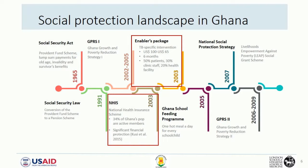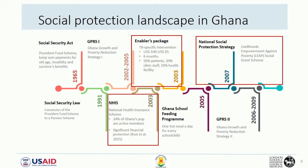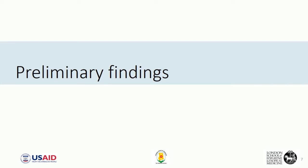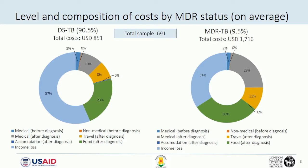The Enabless Package, launched in 2003, is specific for TB patients but is currently being phased out. The Livelihood Empowerment Against Poverty Social Protection Scheme was launched as part of the National Social Protection Strategy in 2007 and is aimed at the rural poor. Data collection took place in November and December, with 691 patients enrolled in the study.